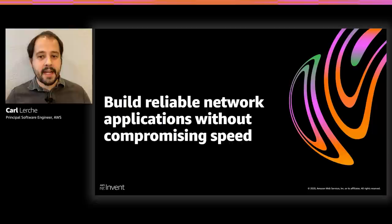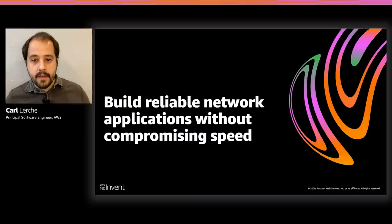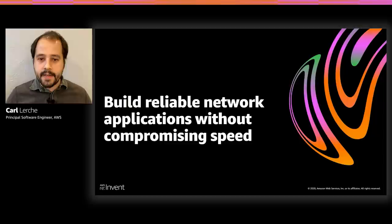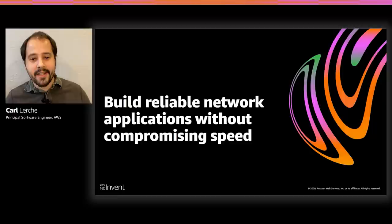Tokyo is an asynchronous runtime for the Rust programming language. It provides the building blocks needed for writing networking applications. My goal for this talk is to convince you that Tokyo and Rust are great tools for building reliable network applications without compromising speed. Even though Rust and Tokyo are relatively new, at Amazon we're finding ourselves using it often, especially when it comes to data plane services.